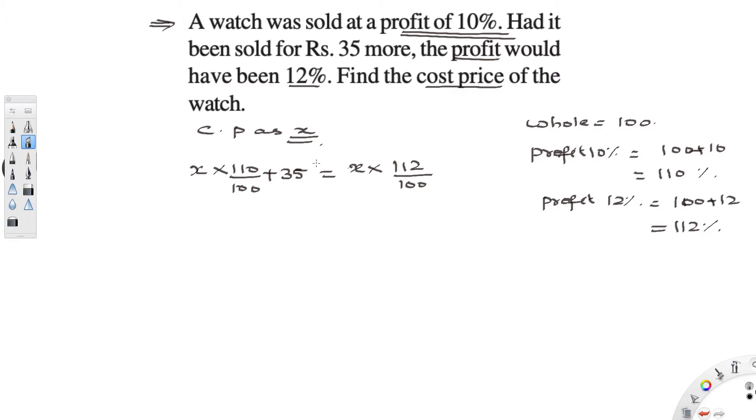Now I got my algebraic equation. So just we have to solve this equation to get the cost price. So here when I multiply, x into 110, I get 110x by 100 plus 35 equal to x into 112 is 112x by 100.